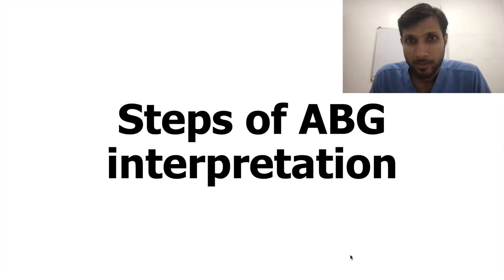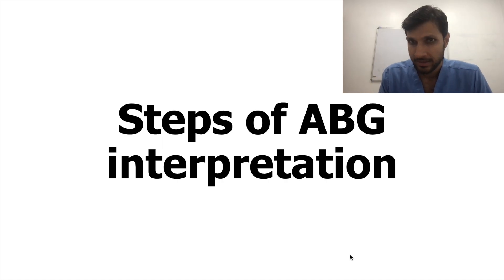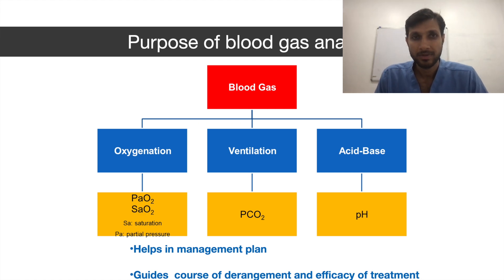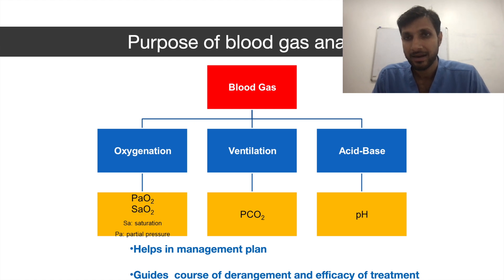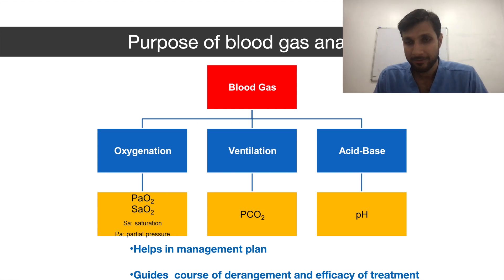Hello, welcome to our latest presentation on the interpretation of ABG. As we know, ABG is the most basic investigation in the ICU. The purpose of blood gas analysis is that from this we can know the oxygenation status, the ventilation status, and the acid-base status of the patient. It will help in management planning and knowing the derangements and the efficacy of treatment, mainly ventilatory treatment.